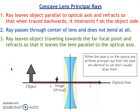So those are the three principal rays for a concave lens. You do need to memorize these. You do need to know that they are different from the principal rays for a convex lens.